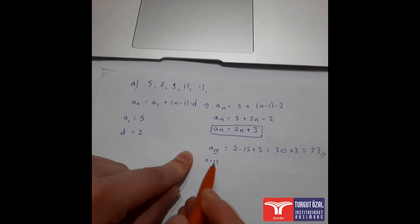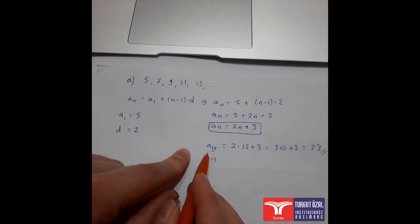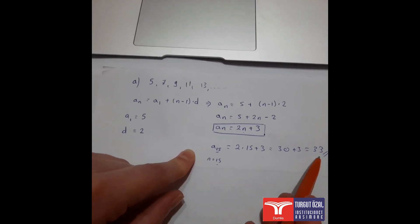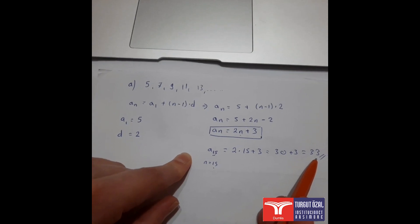Now let's find a15: substituting n = 15, we get 2 × 15 + 3 = 30 + 3 = 33. So the 15th term of this sequence is 33.